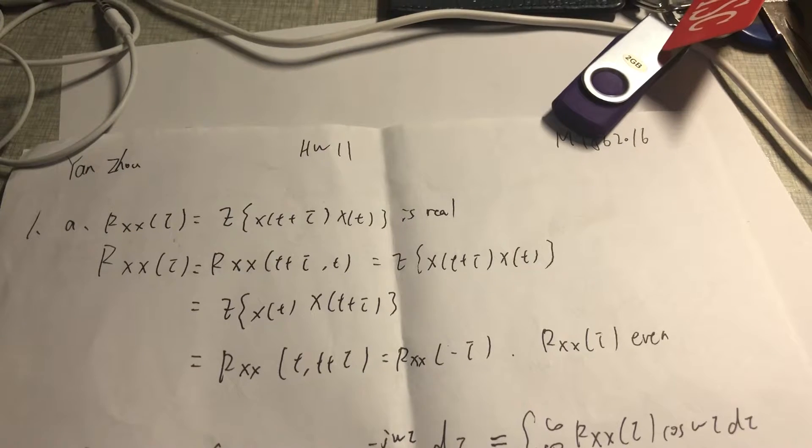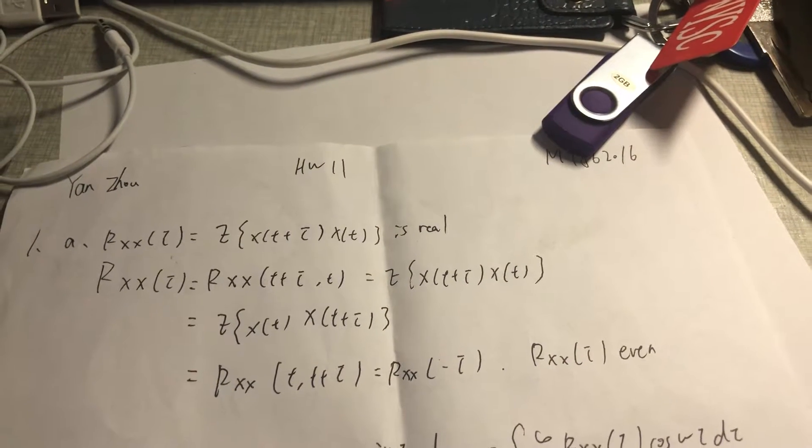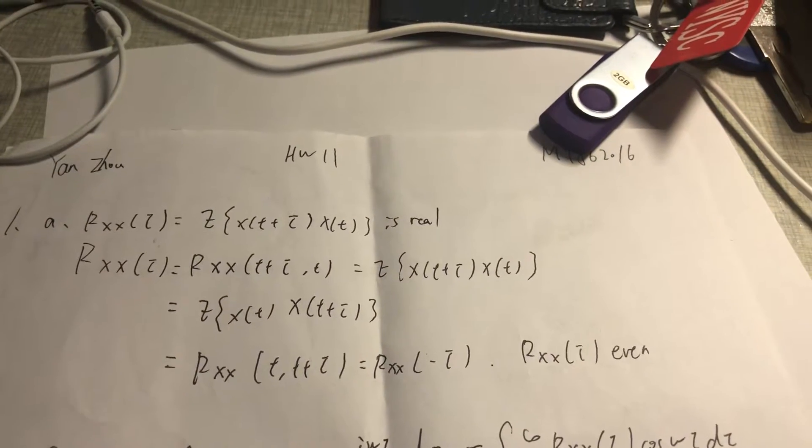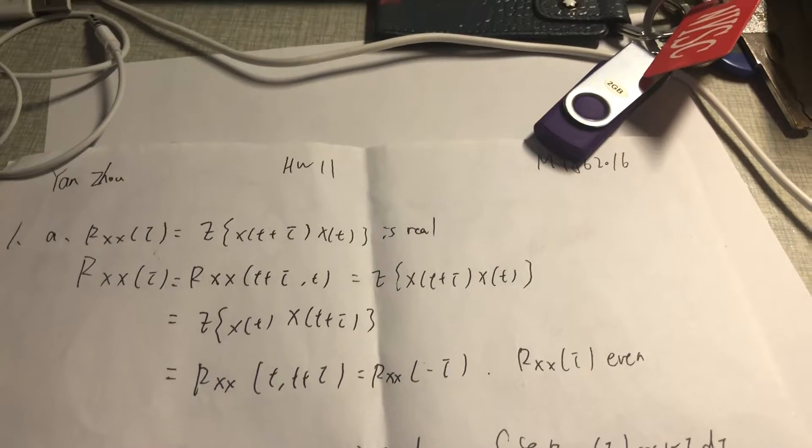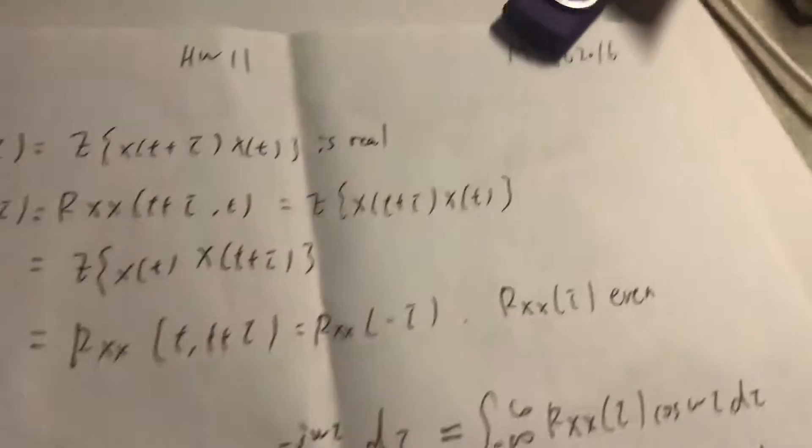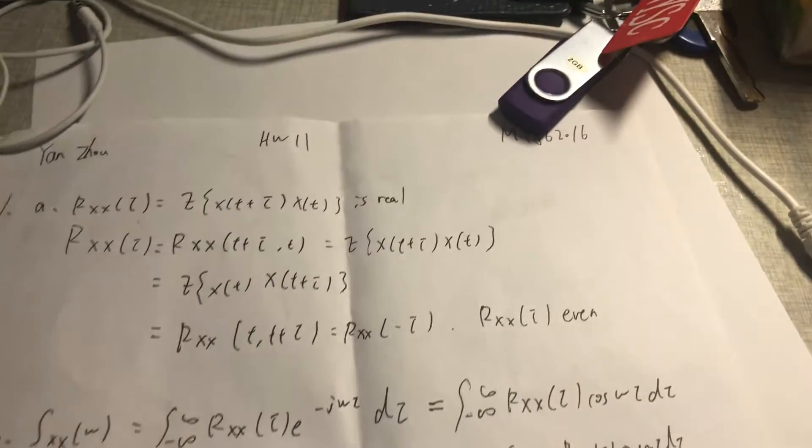So R_XX(τ) equals R_XX(t+τ, t) equals E[X(t+τ)X(t)] equals E[X(t+τ-τ)X(t-τ)] equals R_XX(t, t-τ) equals R_XX(-τ). So R_XX(τ) is even.